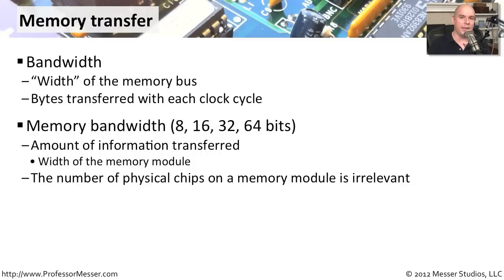Sometimes we're referring to bandwidth as the total number of bits that can be transferred back and forth during a normal clock cycle. Those total number of transfers are represented as 8, 16, 32, or on the most modern memory, we're transferring 64 bits at a time.